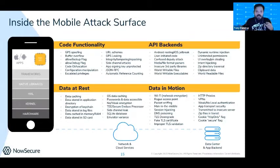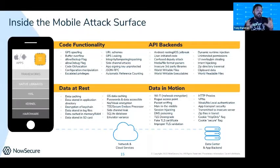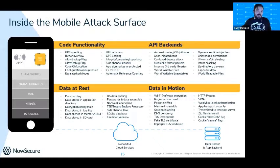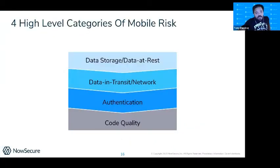We have data at rest issues, data in motion issues, backend API issues, and code functionality issues. It's kind of like publishing code out into the jungle and hoping nobody picks it up and scrutinizes it — but somebody will, that's the reality. It's easy to break these into four high-level categories.